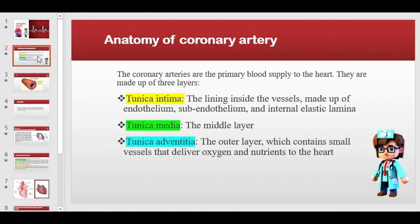Now, the anatomy of the coronary arteries. The coronary arteries are the primary blood supply to the heart. Like every other artery, they are made up of three layers: the tunica intima, the tunica media, and the tunica adventitia. These three layers make up the vascular structure.